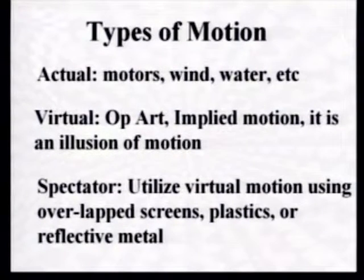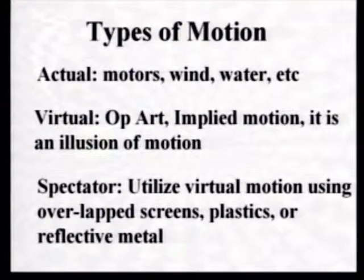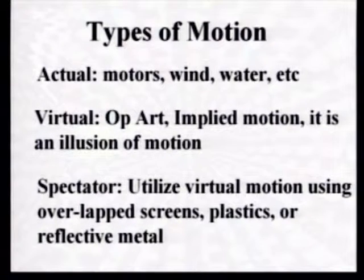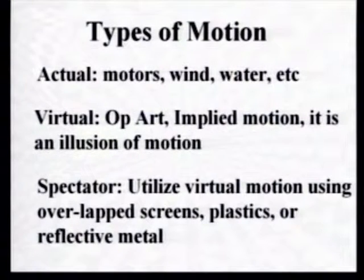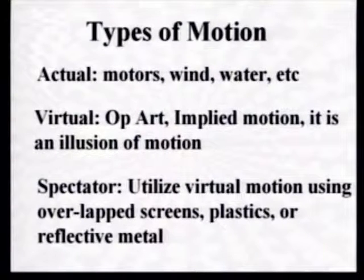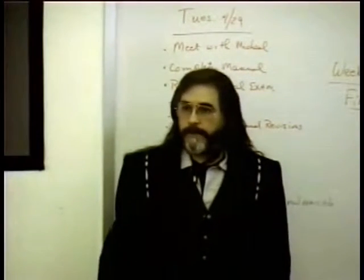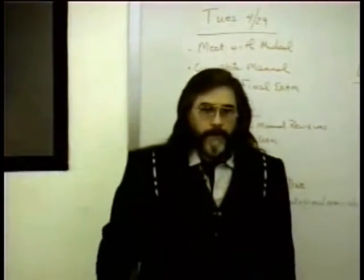You can't get away from the intellectualism because that's been part of art from the beginning, and kinetic art is no different. Spectator motion actually does utilize virtual motion. One example I like to use: when you overlap screens at the right position you see a new pattern emerge. If that's built into your artwork and the viewer moves, the pattern created by the two screens also moves — that is spectator motion. Constructivists also used reflective metals or plastics for both implied and virtual motion through spectator motion.